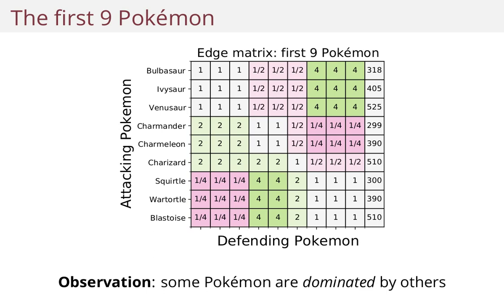So look at, for instance, Bulbasaur and Ivysaur. They're of the same type, so their edge against all the other Pokemon is identical. But Ivysaur has higher total stats. So there's really no reason to ever pick Bulbasaur over Ivysaur here — Bulbasaur is not better in anything, it's actually worse in total stats.